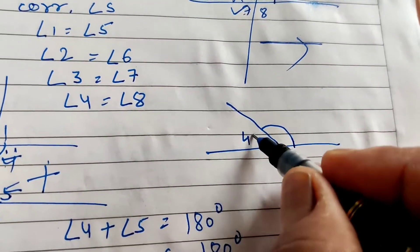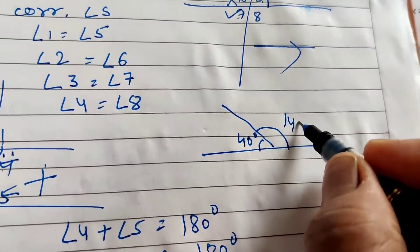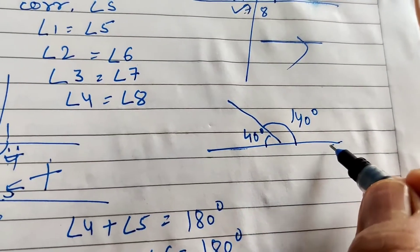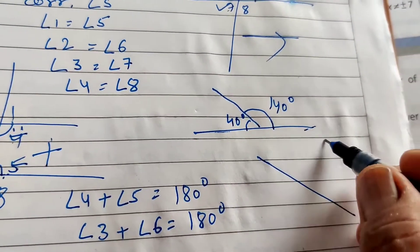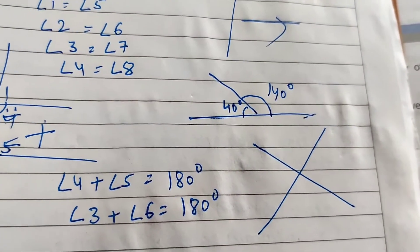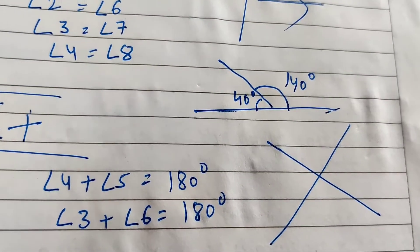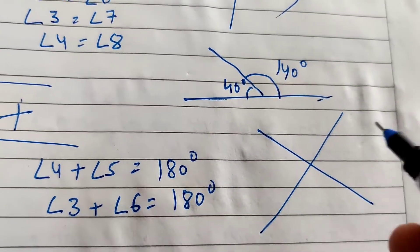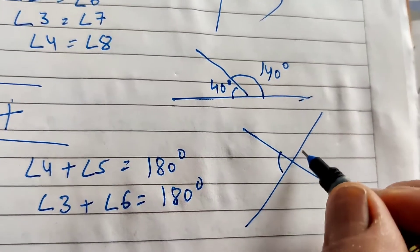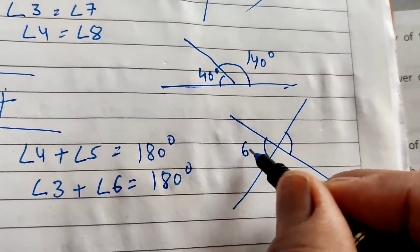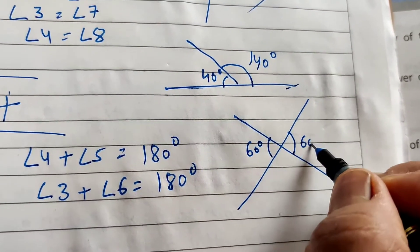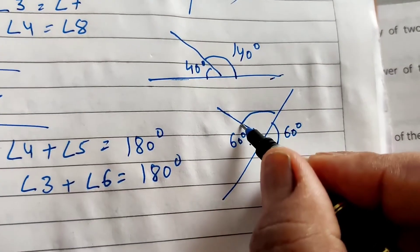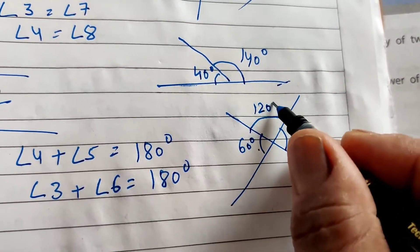We also need to use the linear pair property: when two angles are on a straight line, their sum is 180 degrees. For example, if one angle is 40 degrees, the other is 140 degrees. The other property is vertically opposite angles — when two lines cross, vertically opposite angles are equal. If one is 60 degrees, the opposite is also 60 degrees, and the adjacent angle is 120 degrees.